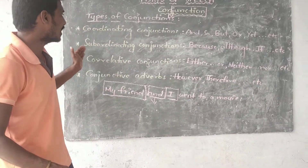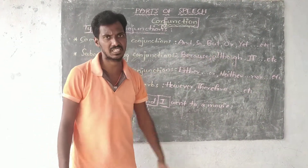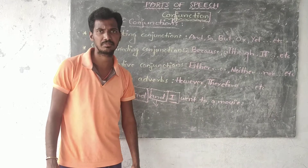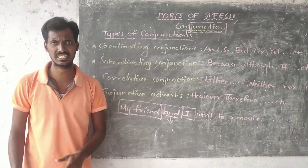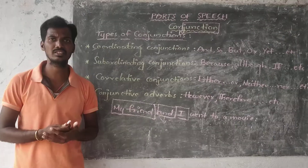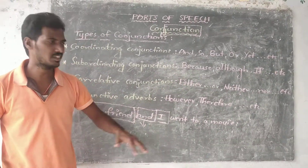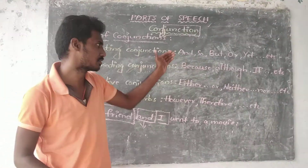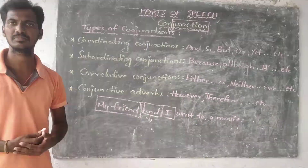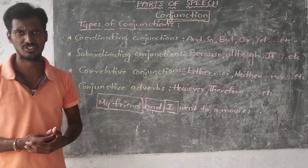Next, subordinating conjunctions. Examples include: because, although, if, etc. For example: I didn't come to class yesterday because I went to Hyderabad to visit my uncle's home. If you want to mention a reason, use 'because' — cause means reason. Another example: Although he is poor, he is honest. These are all called subordinating conjunctions.